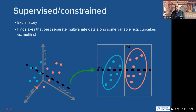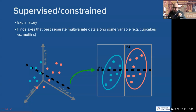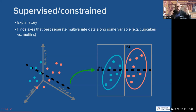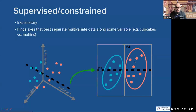A supervised method, on the other hand, is something that's attempting to be explanatory. It finds axes not that explain the variation in the data, but axes that best separate the data along some other variable. Maybe it's drawing a line that best explains the separation between cupcakes and muffins in three-dimensional space. It's the exact same cloud of points — we're just drawing a different line — and this line shows a very different picture when we rotate and project those points.